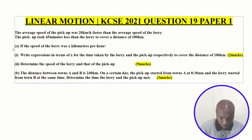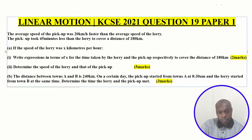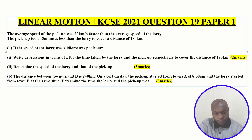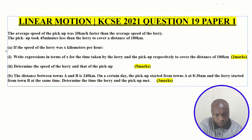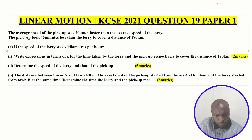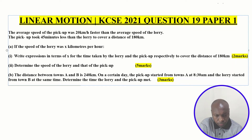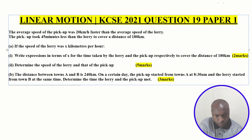Linear Motion KCSE 2021 Question 19 Paper 1. The average speed of the pickup was 20 km per hour faster than the average speed of the lorry. The pickup took 45 minutes less than the lorry to cover a distance of 180 km. If the speed of the lorry was x km per hour, write expressions in terms of x for the time taken by the lorry and the pickup respectively to cover the distance of 180 km.